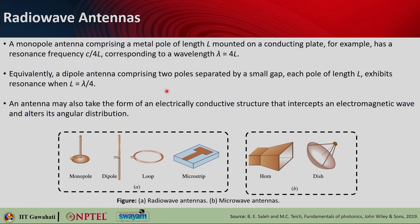Equivalently, you can have a dipole antenna comprising two poles — 'di' means two — separated by a small gap. Each pole is of length L, and again L equals lambda over 4 at resonance. There are other types of antennas — loop and microstrip — but we are mainly focusing on dipole and monopole because we will see their analogs in the plasmonic domain.